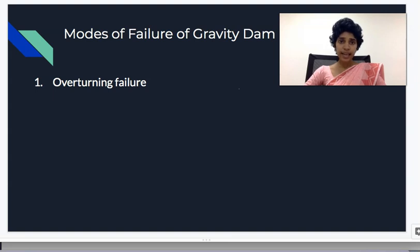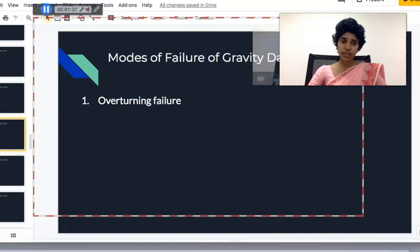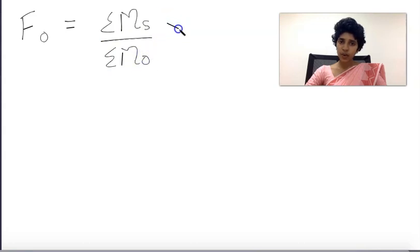The factor of safety against overturning is the ratio of sum of stabilizing moments to sum of overturning moments. Its value should always be greater than or equal to 1.4.